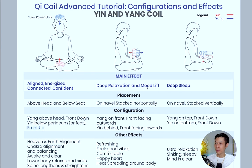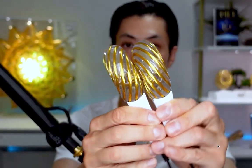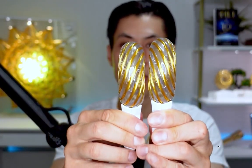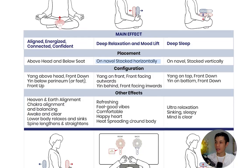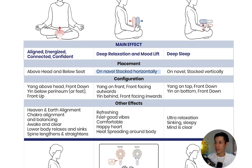The next configuration is deep relaxation and mood lift. Place the coils stacked horizontally on your navel, with the yang front facing outwards and the yin front facing inwards. You can use velcro straps from the store to keep them together in that position, or simply hold them in front of your navel. Other effects you may feel include feeling refreshed, good vibes, comfortable, happy heart, and heat spreading around your body.